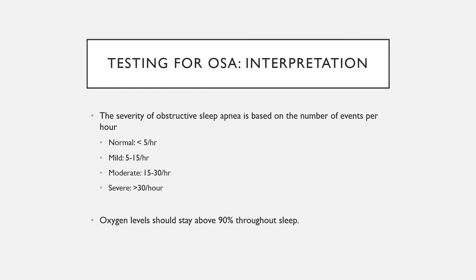The severity of sleep apnea is determined by the number of events you have per hour and the level to which your oxygen level drops. We think it's normal to have up to five events per hour. It's mild sleep apnea if there are between five and 15 breathing events per hour. It is moderate sleep apnea if there are between 15 and 30 events per hour. And it's severe sleep apnea if there are more than 30 events per hour. In a moment I'll be able to tell you how many events you had per hour. Your oxygen level should stay above 90% during sleep, and I'll report that to you as well in just a minute.